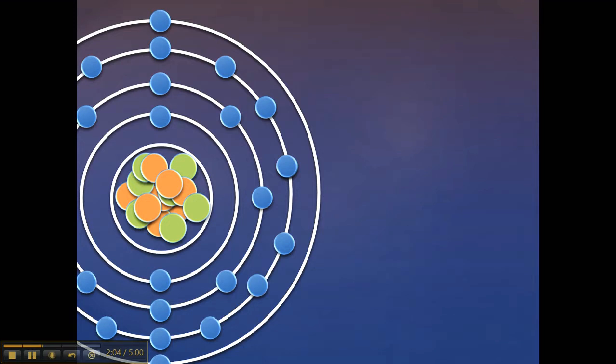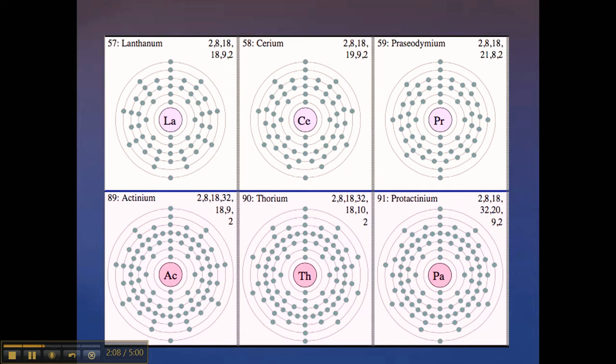The energy difference between each energy level for electrons is actually a specific number affected by the protons in the nucleus, or depending on the element. This means that the energy difference for an electron in an iron atom is different than the energy difference for an electron in a copper atom.